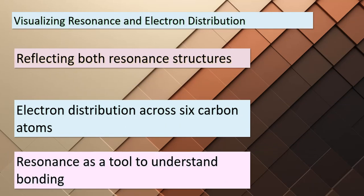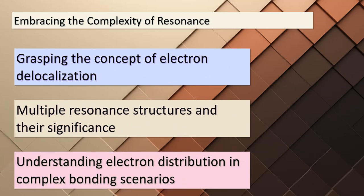In the representation where both resonance structures are considered, the six pi electrons are distributed across all six carbon atoms. This concept enhances our understanding of how electrons are involved in bonding scenarios. Resonance serves as an essential tool for grasping the complexities of bonding. The idea of electron delocalization is a crucial concept in understanding bonding. With multiple resonance structures, we gain a more complete perspective on how electrons are distributed among atoms. This intricate dance of electrons across molecules adds depth to our comprehension of chemical interactions.